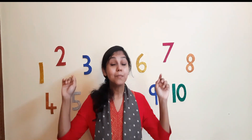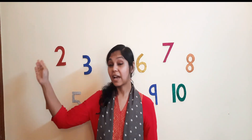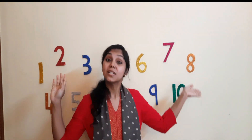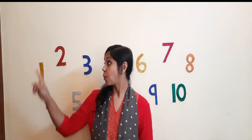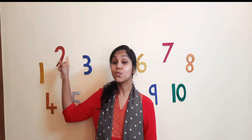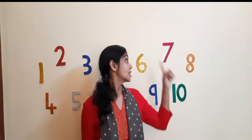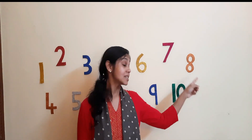What can you see behind me? These are numbers. Here we have a few numbers from 1 to 10: 1, 2, 3, 4, 5, 6, 7, 8, 9, 10.